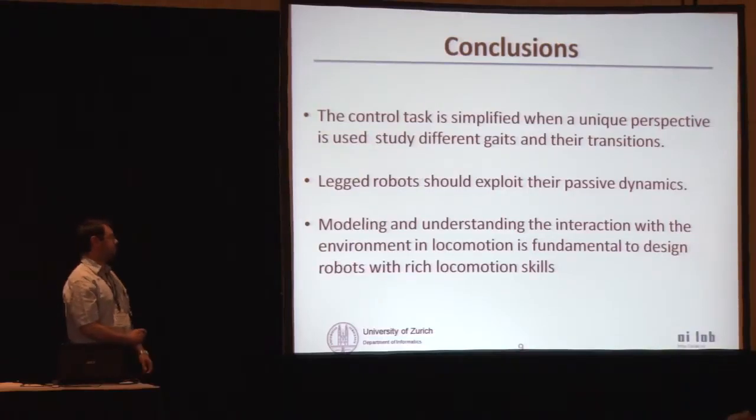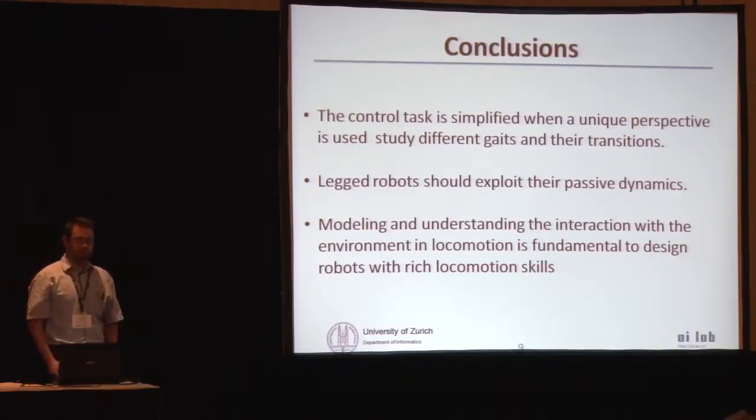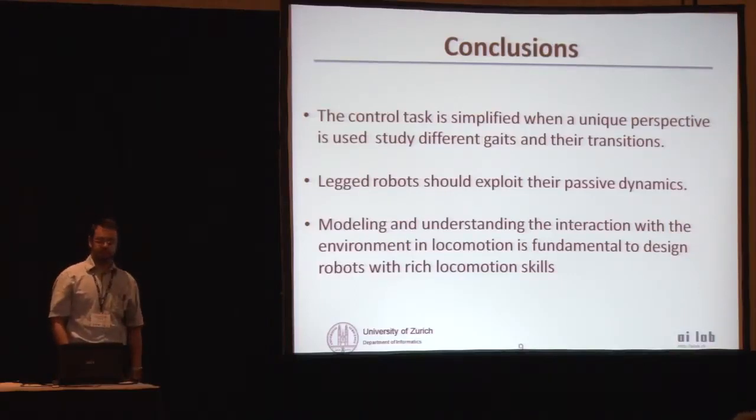And just for conclusions, I think that if you have a representation that allows you to see all the behaviors that was presented here, where you see where the system can run, how we can do transitions, we can develop new strategies that can bring this kind of robot locomotion to our robots. And then we can explore the passive dynamics of the system. And I believe that all these models should be developed in order to understand the interaction that is happening in the locomotion process. And thanks.